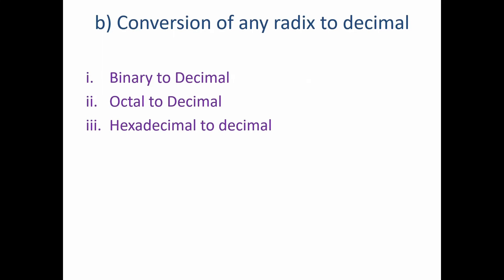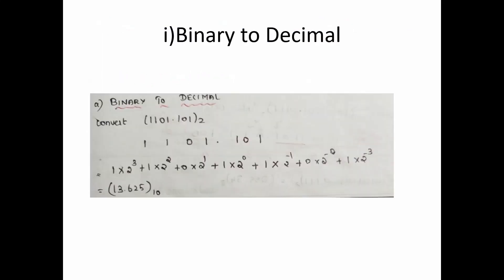First we will see how to convert the given binary to decimal. In this example there is an integer part as well as a fractional part, and we have to find the decimal number. In the integer part, the positions are units, tens, hundreds, and thousands place — with powers 0, 1, 2, and 3.